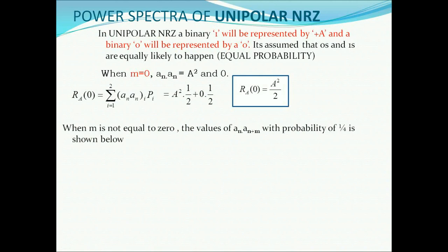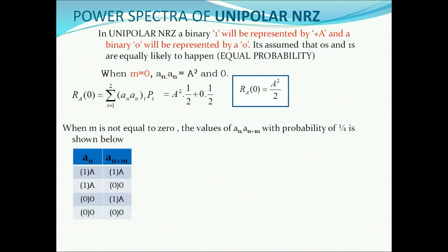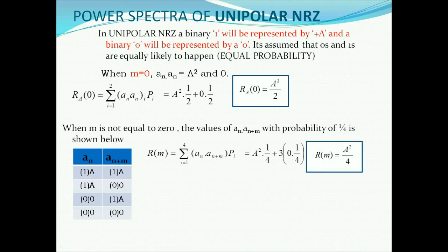Next, when m ≠ 0, the values of An · An+m can be (0,0), (1,0), (0,1), (1,1). With four combinations, the probability of occurrence is 1/4. We calculate Ra(m) = summation i = 1 to 4 of An · An+m(i) × Pi = A² × (1/4) + 3 × 0 × (1/4) = A²/4.